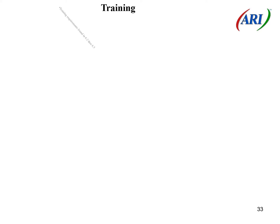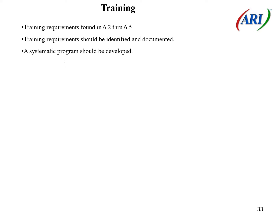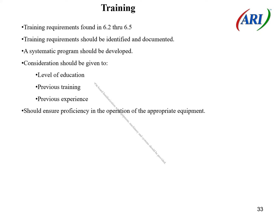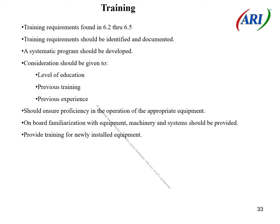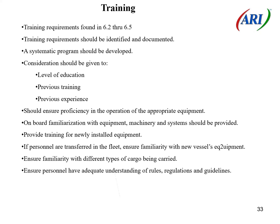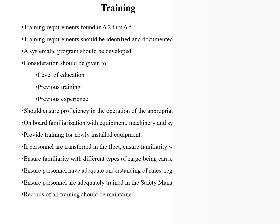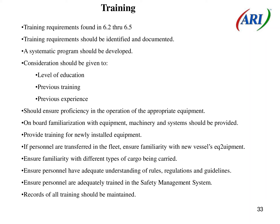Training requirements found in 6.2 through 6.5: training requirements should be identified and documented. A systematic program should be developed. Consideration should be given to level of education, previous training, and previous experience. Should ensure proficiency in the operation of appropriate equipment. On-board familiarization with equipment, machinery and systems should be provided. Provide training for newly installed equipment. If personnel are transferred in the fleet, ensure familiarity with new vessels' equipment. Ensure familiarity with different types of cargo being carried. Ensure personnel are adequately trained in the safety management system. Records of all training should be maintained.